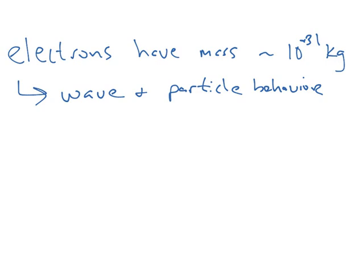We're not going to get too deep into quantum mechanics here. We're just using this to talk about what the quantum mechanical picture of an atom, and more importantly the electrons, are going to look like. Another equation we're going to invoke here is the Heisenberg Uncertainty Principle.